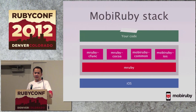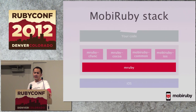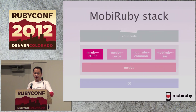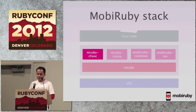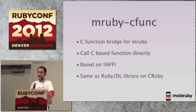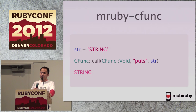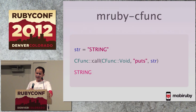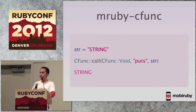I'll talk about MobiRuby internals. MobiRuby is made up of five components. First, mRuby is the main component — it was patched and some configuration was changed. The second component is mRubyCFunc, an interface between C functions and mRuby. mRubyCFunc provides an interface to mRuby and C-level functions, similar to the RubyDL library in CRuby. The code calls the puts C function from Ruby — internally it converts a Ruby string to a C string, looks up the function pointer, and calls the function. mRuby can call all C functions without specific extensions.